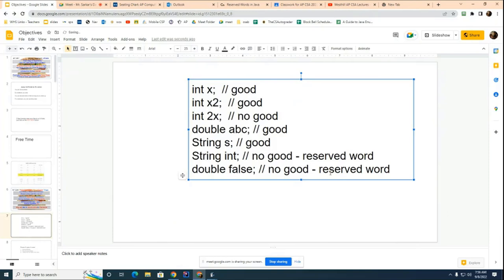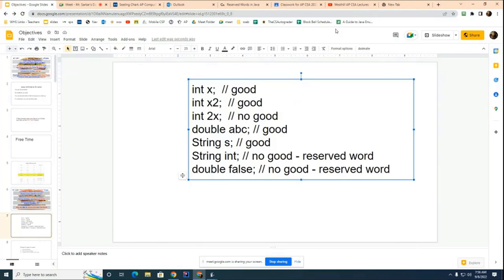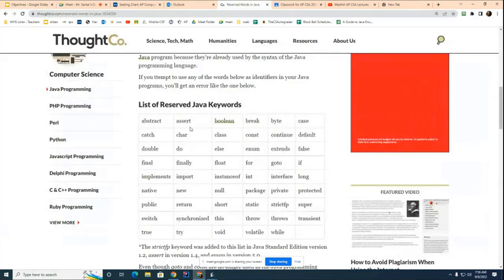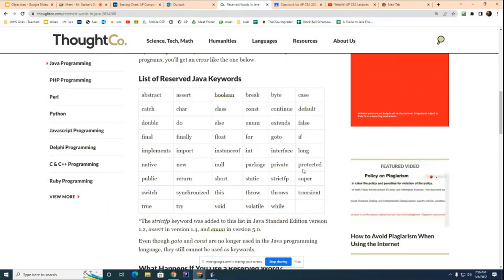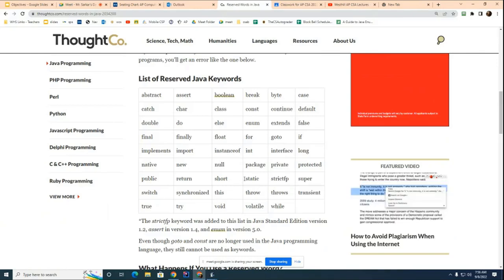Now you might be asking what are all the reserved words and here they are. One two three four five six, one two three four five six seven eight nine. So it looks like there's 53 of them. Now you'll notice that there's nothing special about these words. Notice by the way there's no uppercase here, no uppercase here, and that's just something to keep in mind.